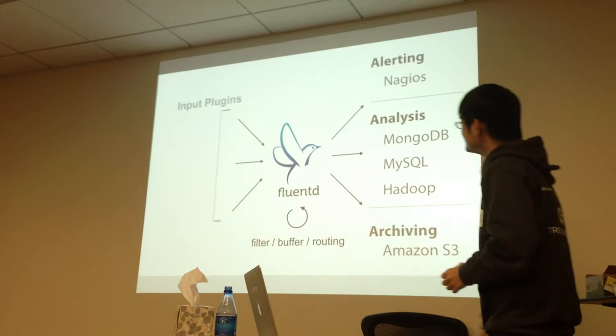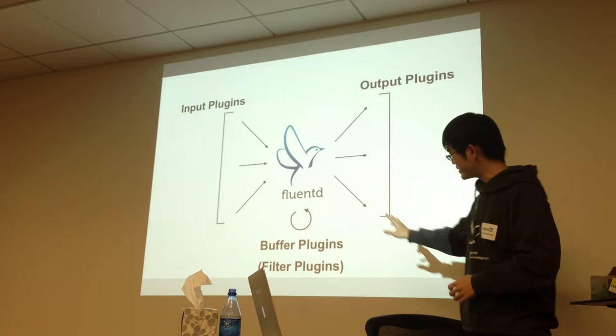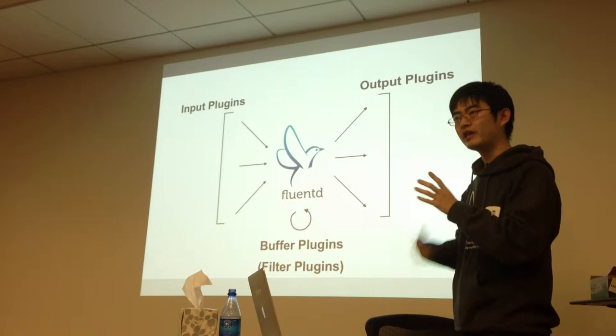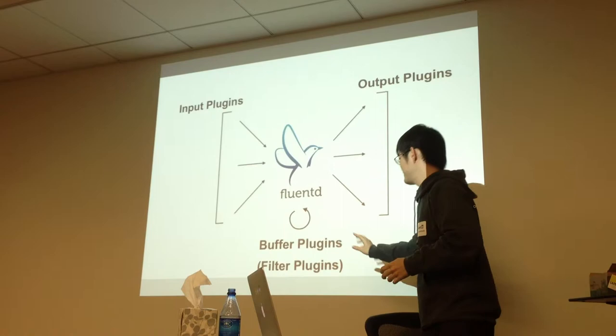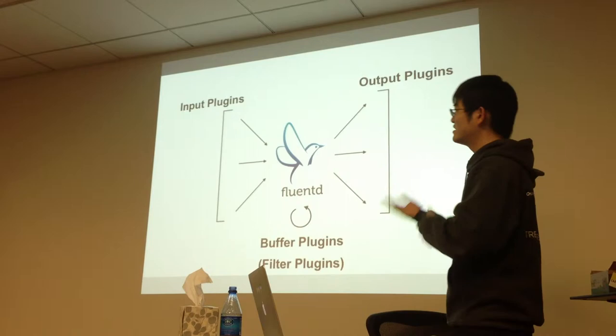There are three types of plugins. The first one is input, the second one is output, and the third one is buffer plugins. This handles performance and reliability problems. In the next major version, there will be a filter plugin, which converts data into another structure or performs some aggregation.